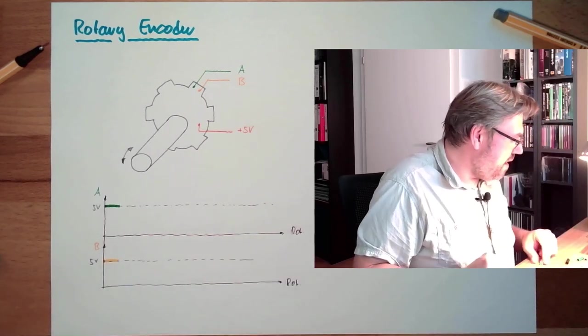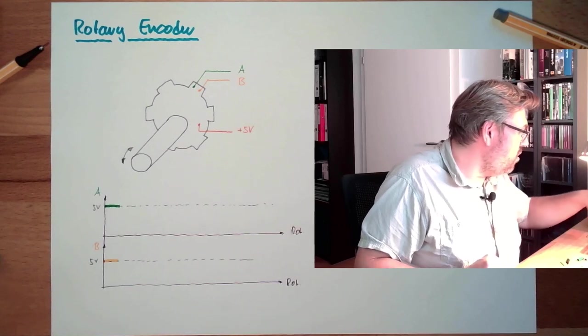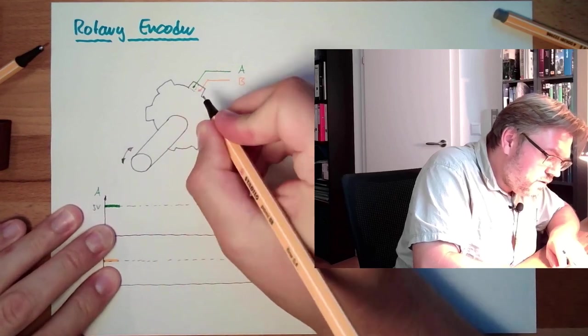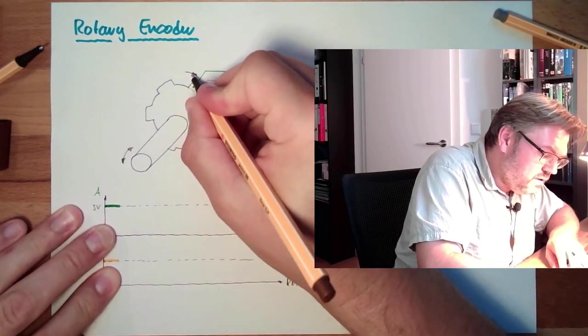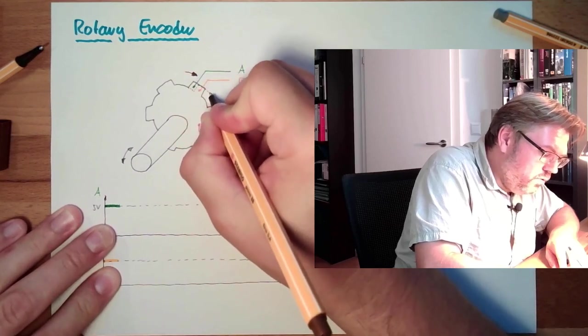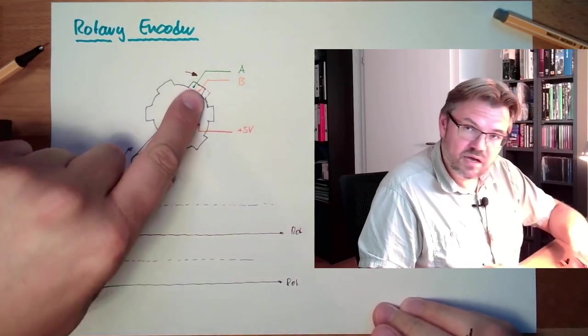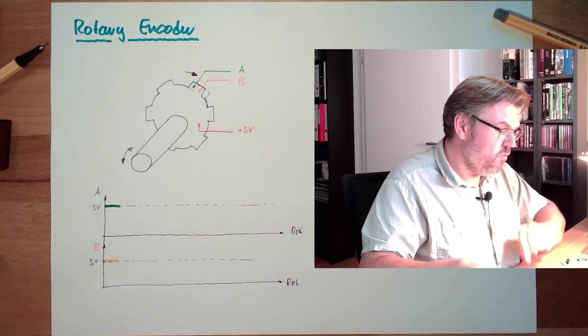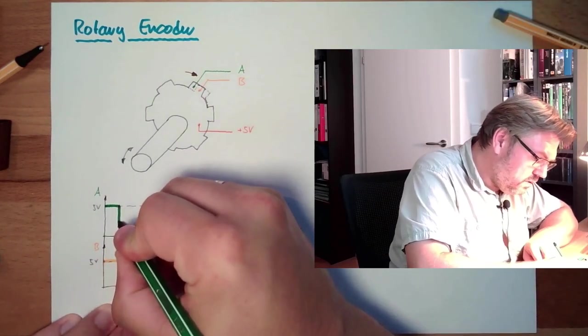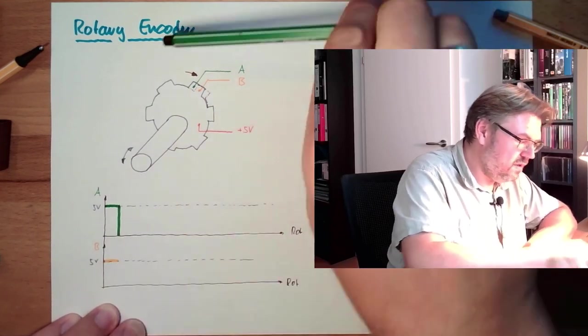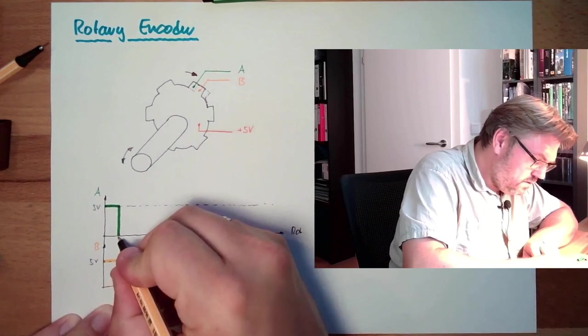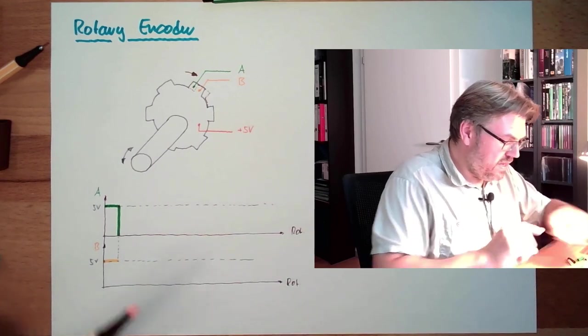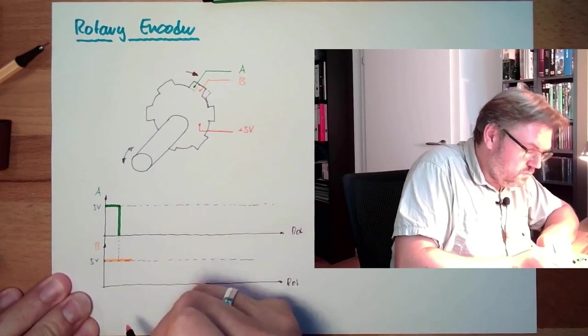And B will have 5V. And some point in time, this rotation was far enough that we are looking like that. So we rotate it in this direction. And then only B is touching the tooth disc and A is already away from it. What does it mean? A will drop to ground. If there is a proper pulldown and so on. At the same point in time, B will stay on.